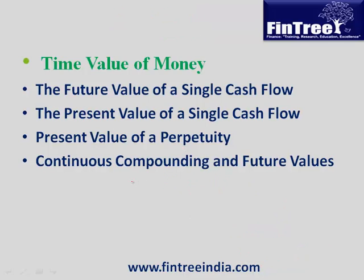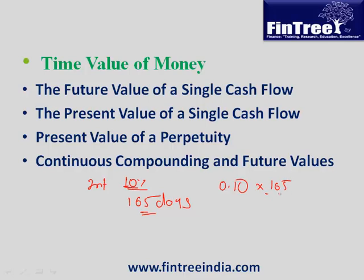If the interest rate is 10% and you want the future value for 165 days, then r is 0.10 and t is 165 divided by 365. Enter that value, press second, then e-to-x, and you get the future value factor, which would be approximately 1.04.